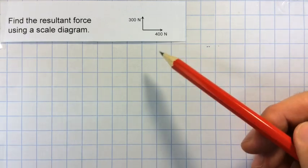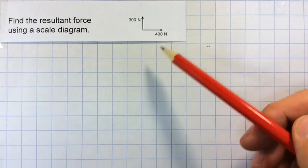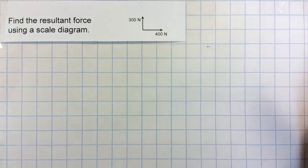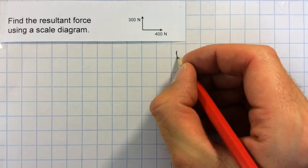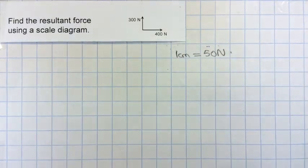So try and make an easy scale. For this, you might choose 1 centimetre is 100 newtons, or you might choose 1 centimetre is 50 newtons, which is what I'm going to do. So I'm going to write that down so I don't forget. 1 centimetre is 50 newtons.